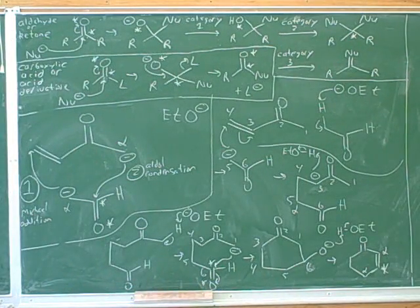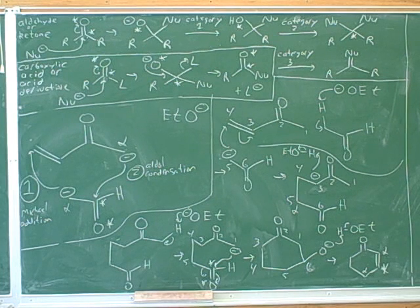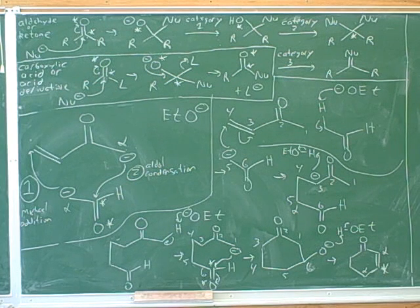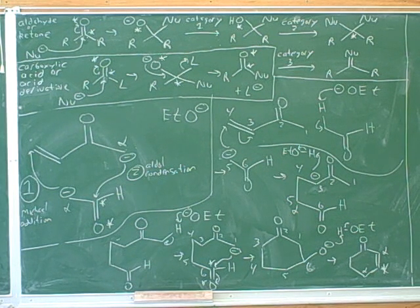So if you start with a product like this and you want to know what you got it from, you erase this part and turn it into an oxygen, and then the one that was across from it, you get the alpha-beta unsaturated portion. So you end up with this fragment, and then you add a hydrogen there, giving you your two starting materials.